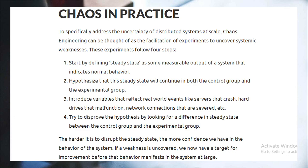Chaos engineering in practice specifically addresses the uncertainty of distributed systems at scale. It can be thought of as the facilitation of experiments to uncover systematic weaknesses. These experiments follow four steps: First, start by defining a steady state as some measurable output of the system that indicates normal behavior. Second, hypothesize that this steady state will continue in both the control group and the experimental group. Third, introduce variables that reflect real-world events — like a server that crashed, a hard drive that malfunctions, or a network connection issue.